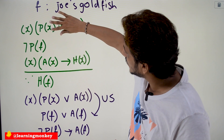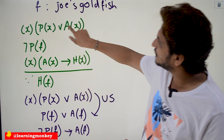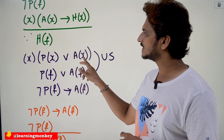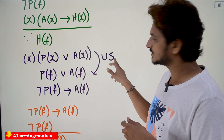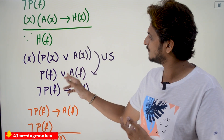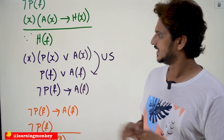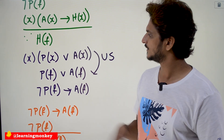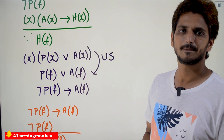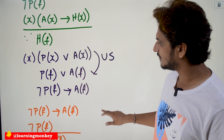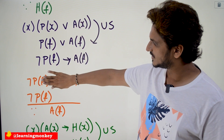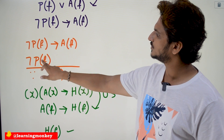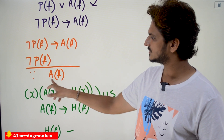Now we execute the proof. Starting with the first equation, for all X, P(X) ∨ A(X). By universal specification, this becomes P(F) ∨ A(F) for our specific subject F. This can be rewritten as ¬P(F) → A(F), using the equivalence that P ∨ Q is the same as ¬P → Q. From the given statement ¬P(F), by modus ponens (P implies Q, P, therefore Q), we conclude A(F).